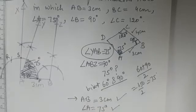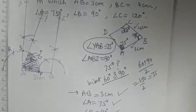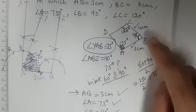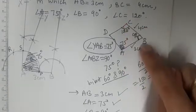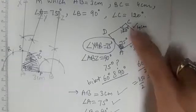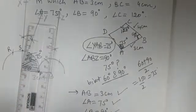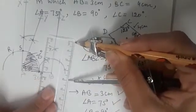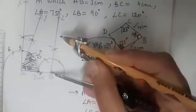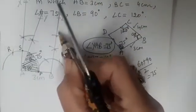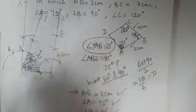Proceeding further — from the rough figure, BC is provided to us, so we set radius to 4 centimeters. With B as center on ray BZ, we cut an arc. This point will be C, because BC = 4 centimeters.